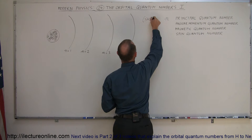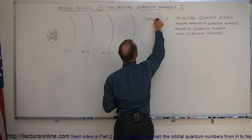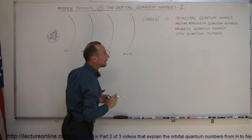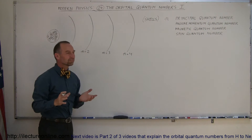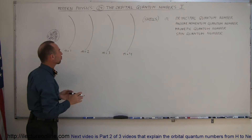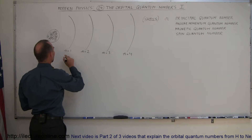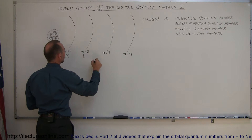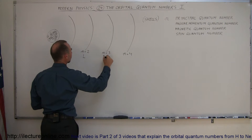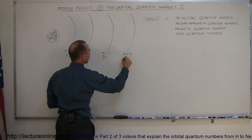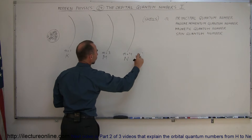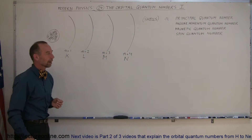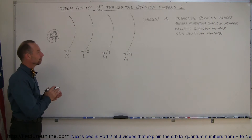Shells in which the electrons can exist, and we give names or letters to those shells. The first is called the K-shell, then the L-shell, the M-shell, the N-shell, and so forth — O and down the alphabet.